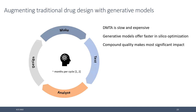Where do generative models fit within drug design? Traditionally, drug design — designing the small molecule ligands as therapeutics — proceeds through the design-make-test-analyze cycle. This is an iterative, slow, and expensive cycle. Per molecule it can take months per cycle, so if you're generating hundreds to a thousand molecules per project, you're looking at a year or two traditionally.